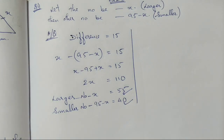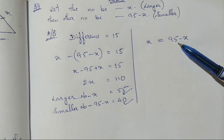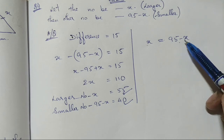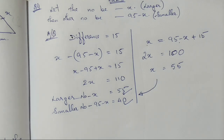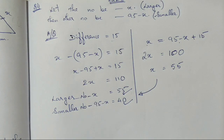In Method 2, we decode the English directly: one number exceeds the other by 15, meaning the smaller number plus 15 equals the larger number. So 15 is added to the smaller number to make it equal to the larger number. This directly gives us the larger number as 55 and the smaller number as 40 — the same result as Method 1. The key insight is that 'exceeds by 15' means the difference is 15.